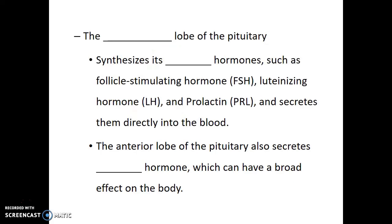The anterior lobe of the pituitary synthesizes its own hormones. These include things like follicle-stimulating hormone and luteinizing hormone. These are gonadotropins, which stimulate the gonads to release their sex hormones and also play a role in triggering things like puberty. Prolactin is another hormone made by the anterior lobe of the pituitary, and this stimulates milk production in mammals.